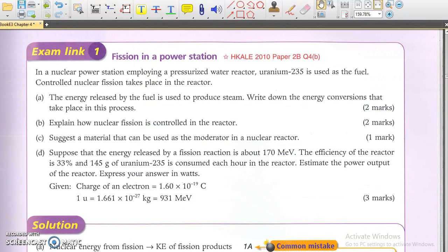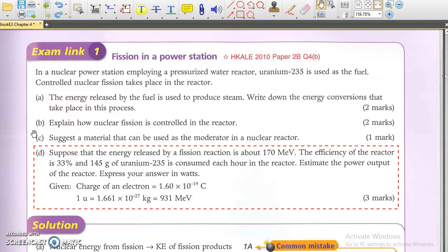Example 4: Fission in a power station. The first few parts are straightforward. For the last part, you have to estimate the power output of a nuclear reactor.